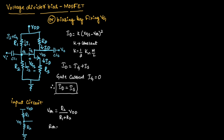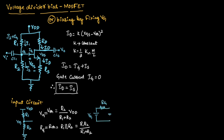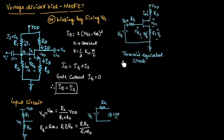Thevenin's resistance can be found by taking R1 parallel with R2, which will be equal to R1R2 divided by (R1 plus R2). So, Thevenin's voltage is nothing but Vg — the voltage across the gate — and Thevenin's resistance is nothing but Rg, which is the resistance across the gate terminal. Instead of using the original circuit across the input, we can use a single voltage source equal to Vg and a single resistance equal to Rg. This is the Thevenin's equivalent circuit after simplification of the input side.